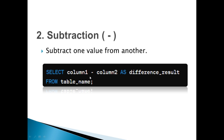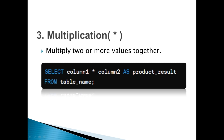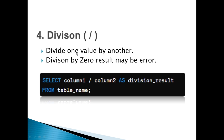The subtraction query is: SELECT column1 - column2 AS difference_result. The multiplication operator multiplies two or more values together: SELECT column1 * column2 * column3 AS product_result.